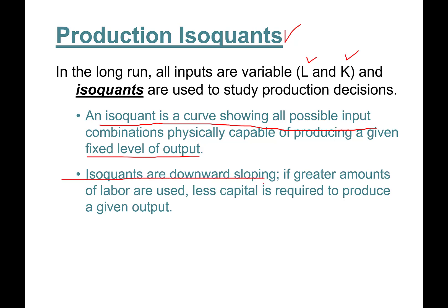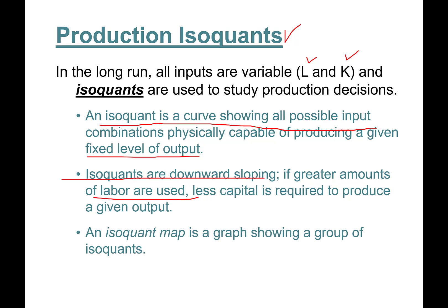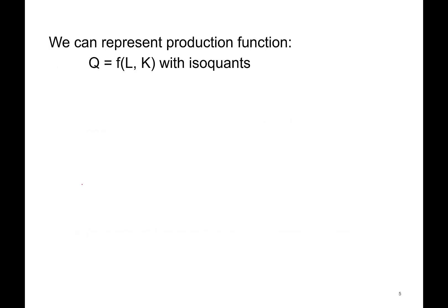Isoquants are downward sloping. If greater amounts of labor are used, you can free up some capital, so less capital is required to produce a given output. An isoquant map is a graph showing a group of isoquants. We can represent a production function with isoquants — for instance, if I want to produce 100 cars per day, I can find different combinations of labor and capital that exactly produce 100 cars per day.